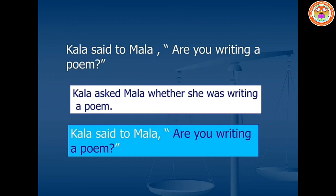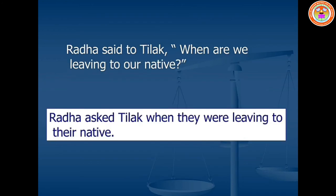Remember children, we should not keep a question mark at the end, and we have to place the pronoun in front of the verb. Number four: Radha said to Tilak, 'When are we leaving to our native?' This is a WH question, so no conjunction word. 'Said to' changes to 'asked.' 'Are leaving' should be changed as 'were leaving.' The pronoun 'we' should be changed as 'they,' and 'our' as 'their.' Answer: Radha asked Tilak when they were leaving their native.